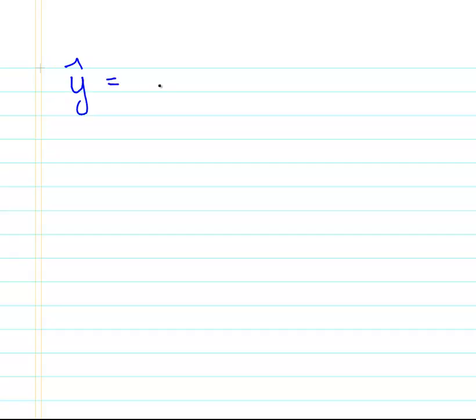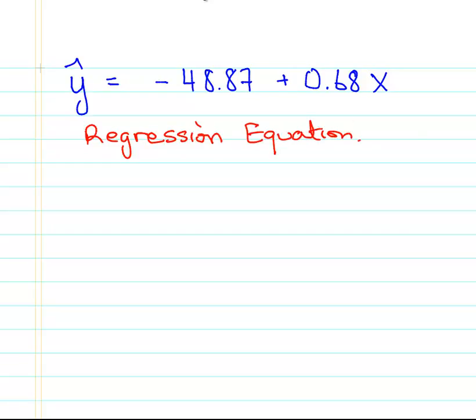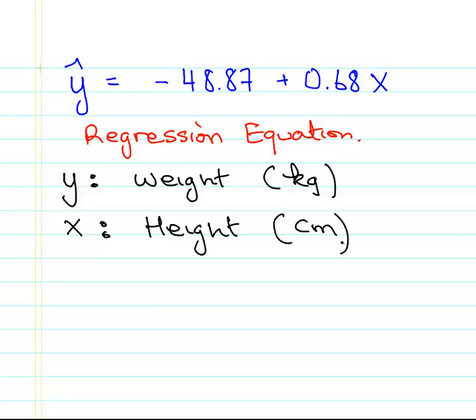So let's just piece that all together. Y hat equals minus 48.87 plus 0.68X. So that is our regression equation. That's essentially most of our answer. But it's important to actually say how you would use it. It's very important to say what Y is, first off. In the example I'm taking this from, Y is actually weight measured in kilograms, and X is height measured in centimeters. It's actually important to mention that.